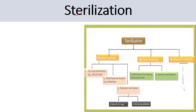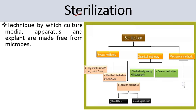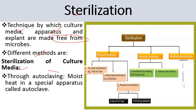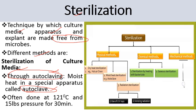Next comes sterilization. As the name indicates, this is the process by which we can make cultures contamination-free. This is the technique by which culture media, apparatus, and explants are made free from microbes. This process is known as sterilization. It includes different methods. Sterilization of culture media is done through autoclaving, using moist heat in a special apparatus known as autoclave, often done at 121 degrees Celsius and 15 lbs pressure for 30 minutes.